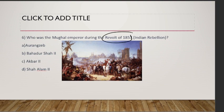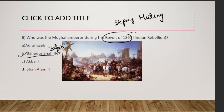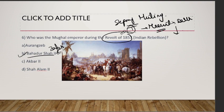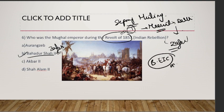Which Mughal emperor was ruling during the Revolt of 1857? The answer is Bahadur Shah Zafar, also known as Bahadur Shah II. The Revolt of 1857, also called the Sepoy Mutiny, saw soldiers come from Meerut to Delhi. When they reached Delhi, they declared Bahadur Shah Zafar as the central leader of the revolt. He was very old and couldn't do much himself, but the motive was to show unity under the Mughals and to refuse recognition of the British East India Company as their ruler.